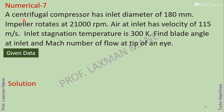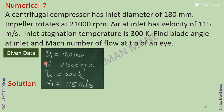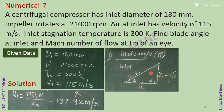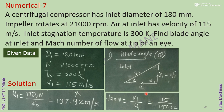Next numerical: a centrifugal compressor has an inlet diameter of 180 mm. The impeller rotates at 21,000 RPM. Air at inlet has a velocity of 115 m/s. Inlet stagnation temperature is 300 Kelvin. Find blade angle at inlet and Mach number. Given: D1, speed, stagnation temperature at inlet, and velocity at inlet. First, calculate U1 using pi D1 N divided by 60. Then using the inlet velocity triangle, find blade angle using tan(theta) equals V1 divided by U1, with known V1 and calculated U1, to find theta.